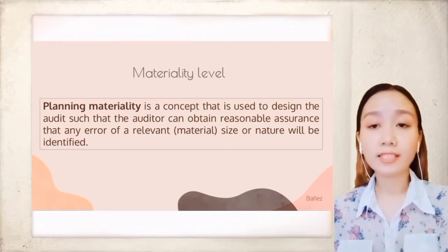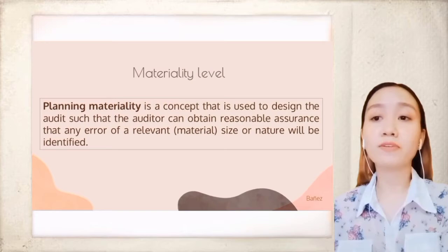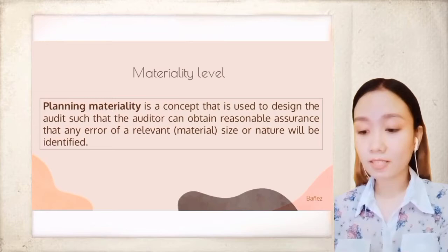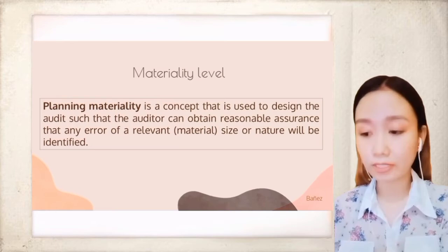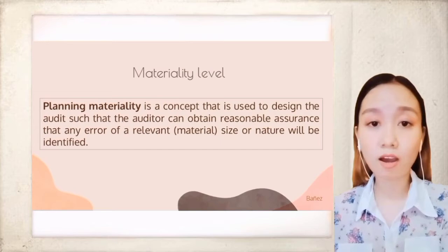Next is the materiality level. Planning materiality is a concept used to design the audit such that the auditor can obtain reasonable assurance that any error of a relevant size or nature will be identified. Planning materiality refers to the misstatement amount set by the auditors at the planning stage of the audit. It is a benchmark used to obtain reasonable assurance that an audit does not miss any material misstatement that can significantly impact the usability of the financial statements.